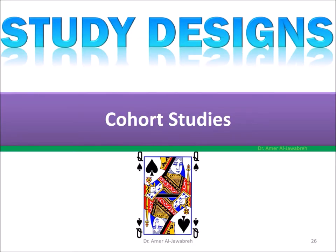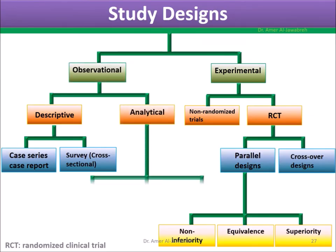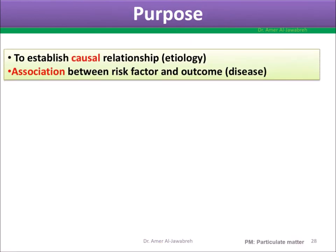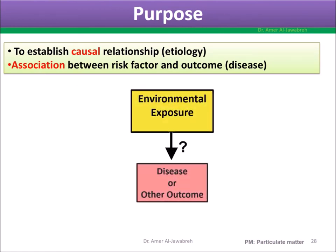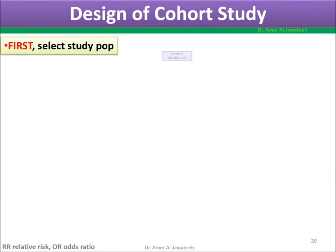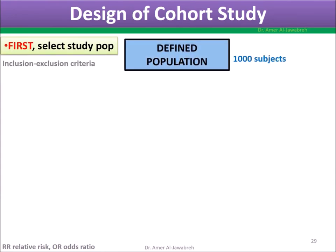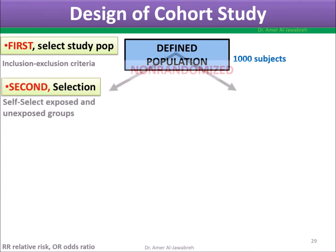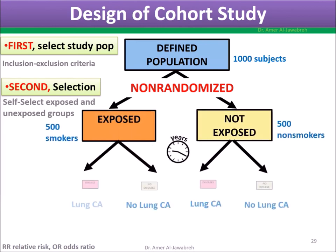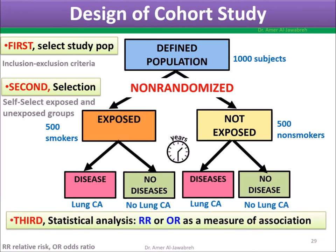Cohort studies — the queen of studies. It is an observational and analytical type of study. Purpose: to establish a causal relationship and association between risk factor and disease. Design: First, select the study population based on inclusion and exclusion criteria. Second, non-random selection of study groups, with long-term follow-up for the development of disease. Third, use relative risk or odds ratio to measure association.